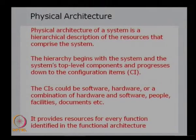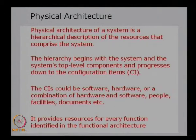The physical architecture identifies which components provide which functions, which functions are mapped to a particular component, which components provide multiple functions, and which multiple functions are satisfied by a single component. It provides resources for every function identified in the functional architecture. The basic idea is that we have the functional architecture, and from it we identify the physical resources for every function.